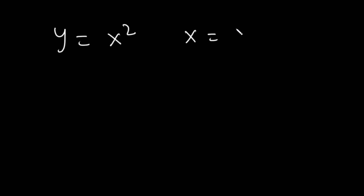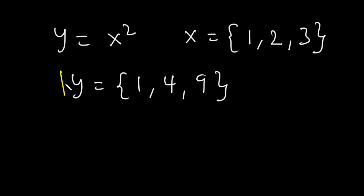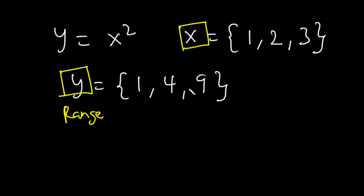For instance, let's say we have a function y is equal to x squared, with x being 1, 2, and 3. Then y is going to be 1, 4, and 9, because 1 squared is 1, 2 squared is 4, and 3 squared is 9. In this case, y is called the output of the function, the range, or the dependent variable because it depends on the values of x. And x is called the input to the function, or the independent variable.